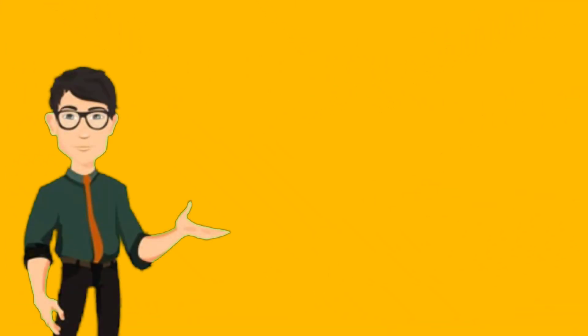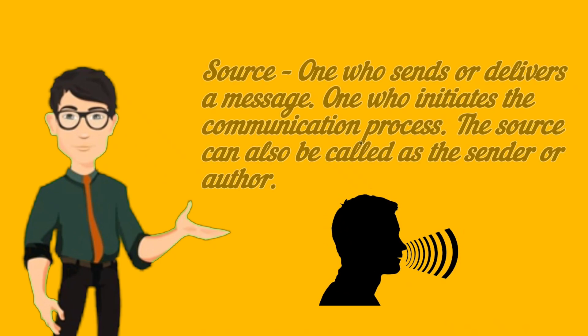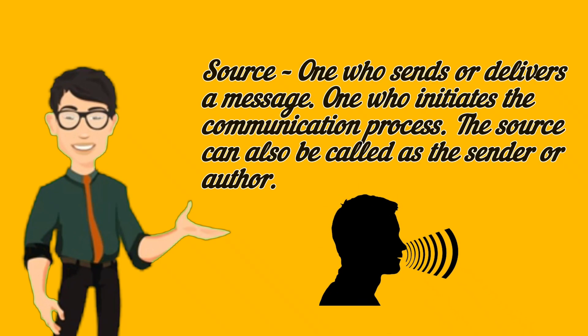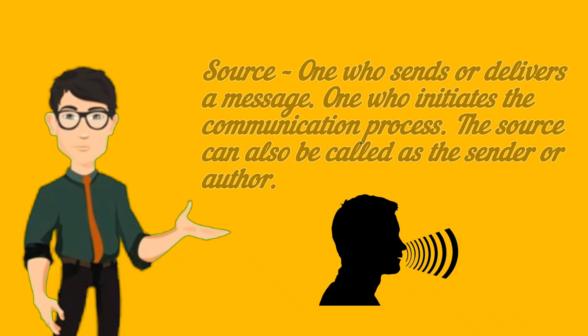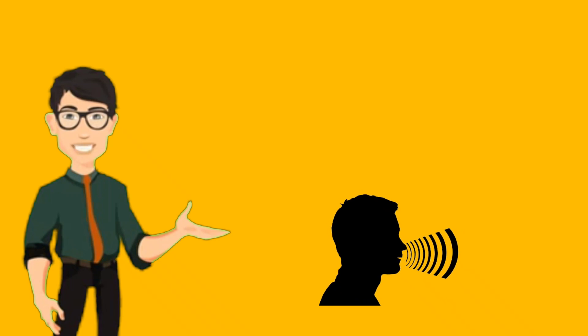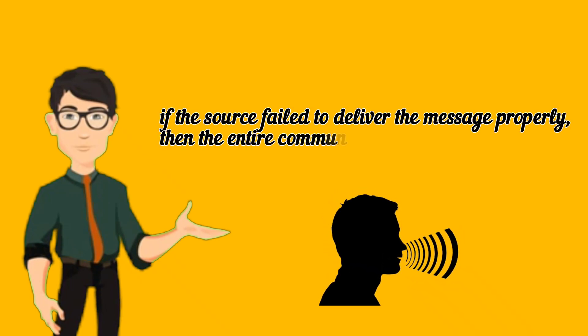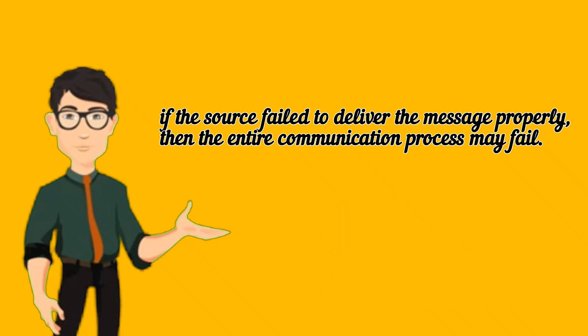Like any other process, the communication process also has parts or elements. The first is the source — one who sends or delivers a message and initiates the communication process. The source can also be called the sender or author. The source plays a crucial role in the process because if the source fails to deliver the message properly, then the entire communication process may fail.